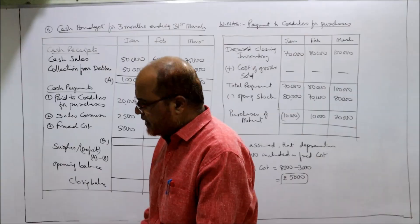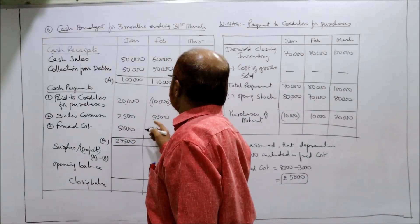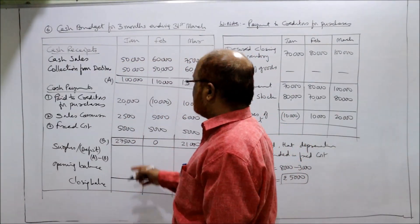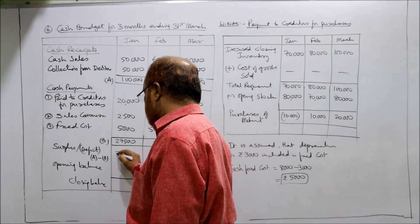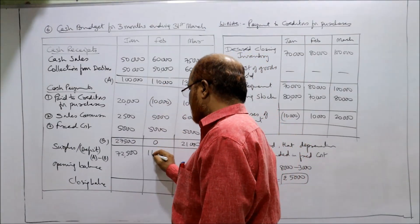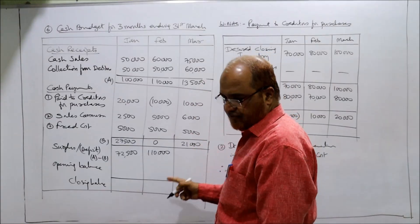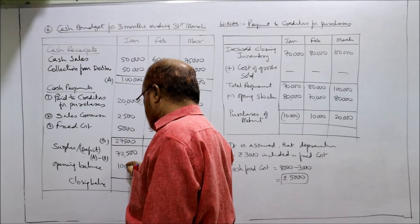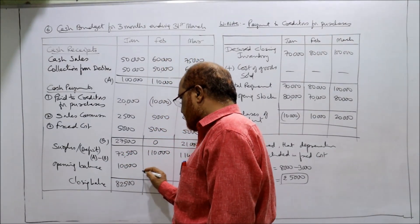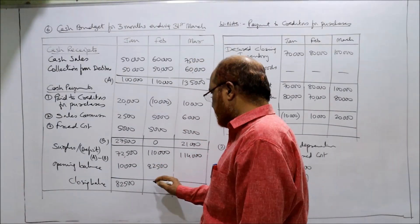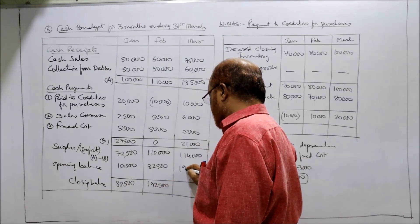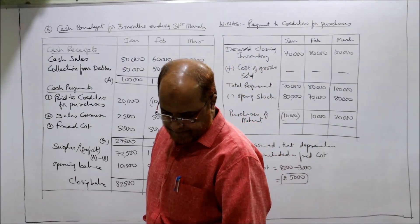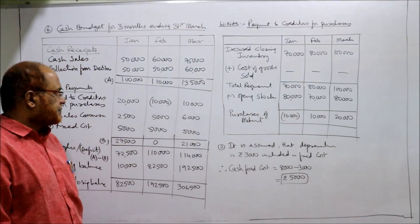Now we take the total. Here, 27,500. Here it is 0; 16, 21,000; and 21,000. Now, surplus or deficit? 1,00,000 minus 27,500 — here it is 72,000. Surplus. Here, 1,10,000 minus 0 is 1,10,000. Here, 1,35,000 minus 21,000 is 1,14,000. Surplus. Now, opening balance is given in the problem — Rs. 10,000 cash balance opening. So it will become 82,000. Here also 82,000. Now add up: 1,92,000. This will become 1,92,000. Total is 3,06,000. That's it — 3,06,000. This is the cash budget.